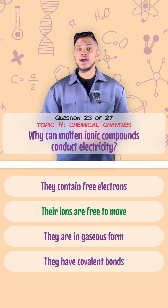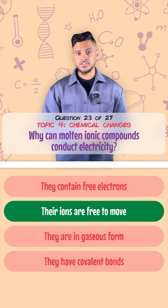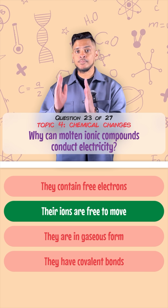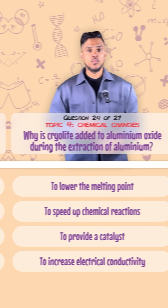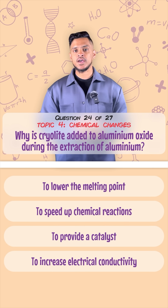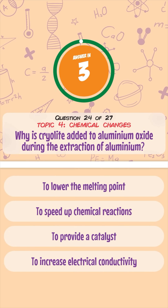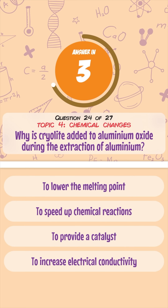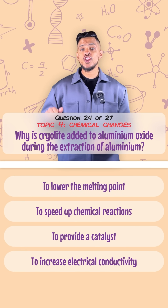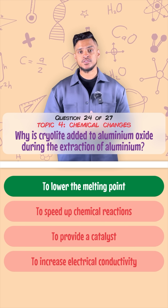Why can molten ionic compounds conduct electricity? It's because their ions are free to move — not because electrons are free to move, as many people think. Free-moving electrons are found in metals and in graphite. Why is cryolite added to aluminium oxide during the extraction of aluminium? It's because it lowers the melting point of the mixture, which makes it cheaper to melt.